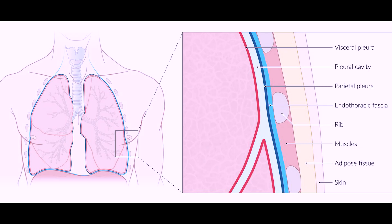The lung has a space between it — the ribs and the actual lung — and this is your pleural space. You have your visceral pleura on the outside of the lung, which is attached to the ribs, and then your parietal pleura on the actual lung, which surrounds your blood vessels, nerves, and bronchi.